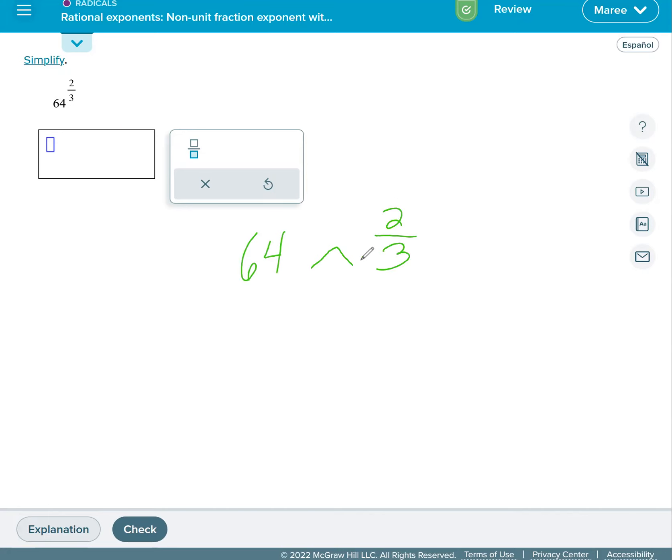So we have the cubed root of 64 squared. Let's think about this. 64 is 8 times 8, so we have the cubed root of 8 times 8 and that's squared. So we're going to have two more 8s. We need groups of three in order to pull one out.